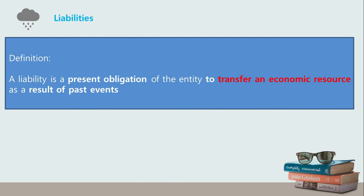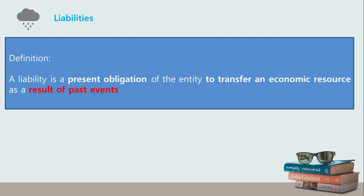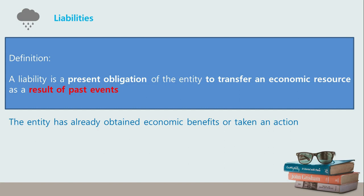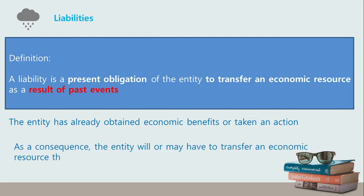Because the moment the inventory has been sold, the warranty is already attached to it. The third criterion is that the present obligation must be a result of past events. A present obligation exists as a result of past events only if the entity has already obtained economic benefits or taken an action — for example, the entity has already obtained the proceeds of a loan, or has already consumed utilities which are unpaid — and as a consequence the entity will or may have to transfer an economic resource, such as making principal and interest repayments or payments to utility companies.